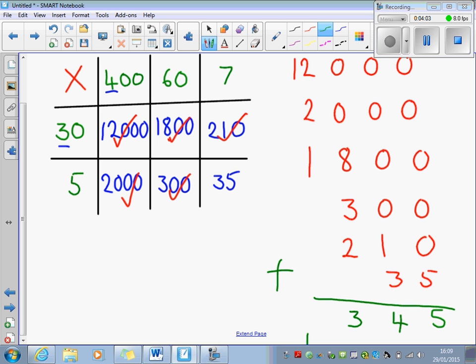And then 12 add 2 add 1 add 1 would make 16. So my final answer would be 16,345. And that is how you use the grid method to multiply a 3-digit number by a 2-digit number.